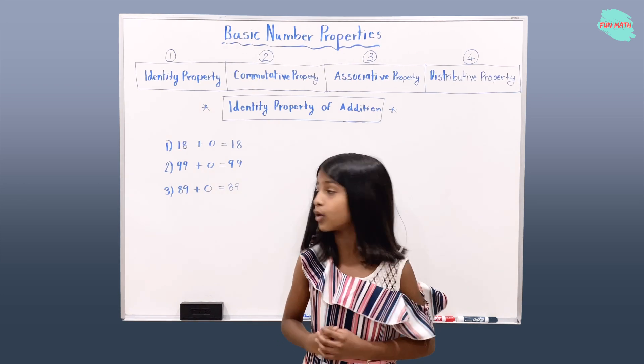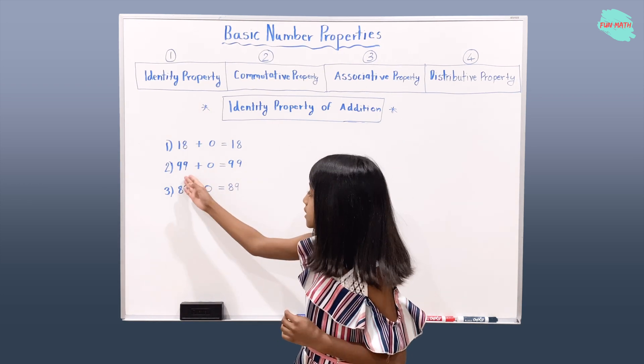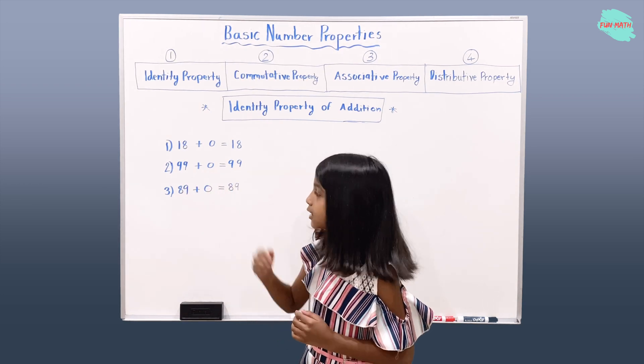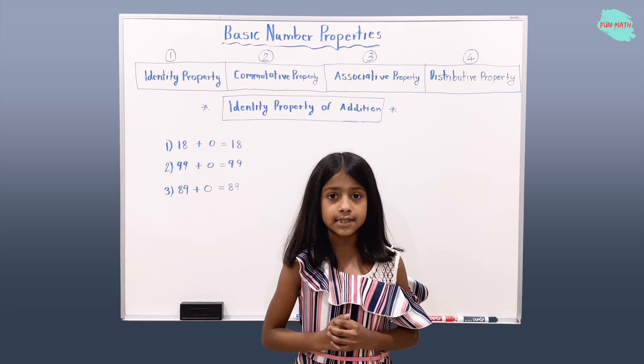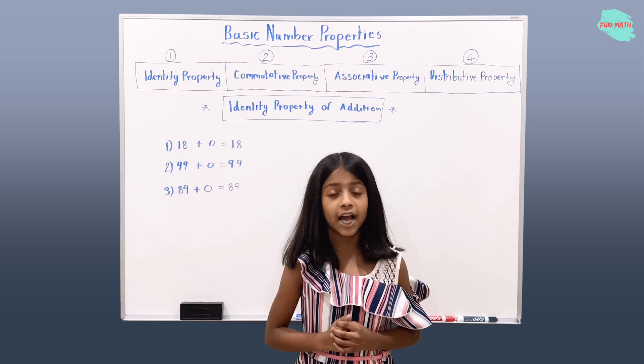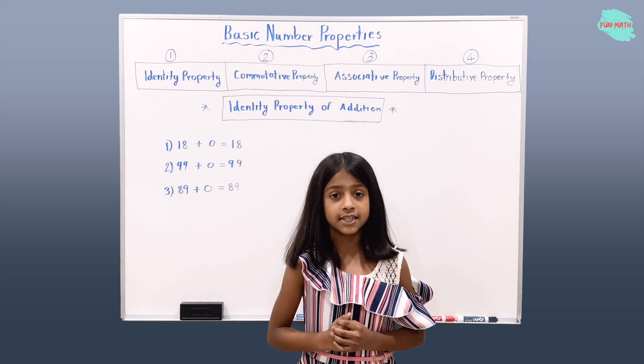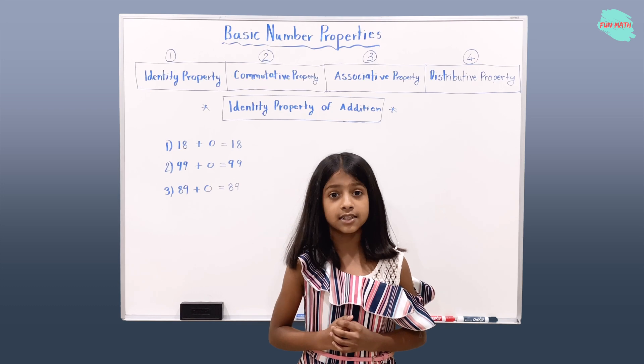The next example: 99 plus zero equals 99. 99's identity is not changing after adding zero with 99. It still gives us 99.